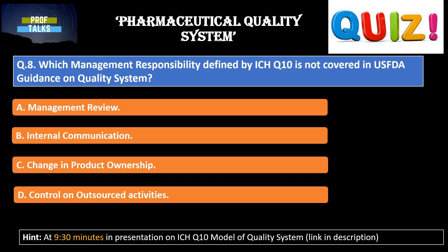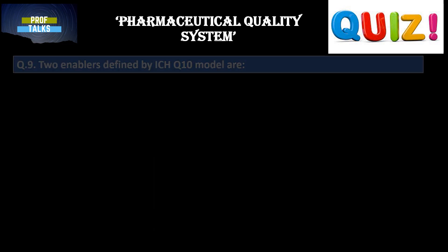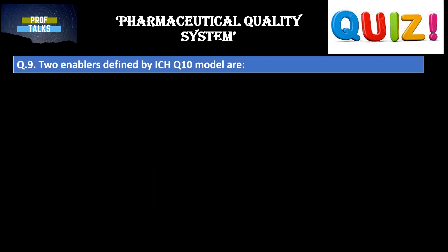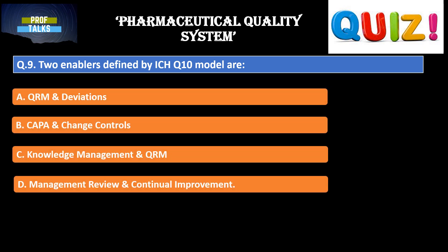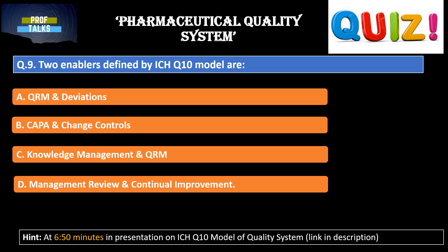Question number nine: two important enablers defined by the ICH Q10 model are — options are: quality risk management and deviation CAPA and change controls; knowledge management and quality risk management; management review and continual improvement. The answer to this question is available at 6.50 minutes in the ICH Q10 presentation.